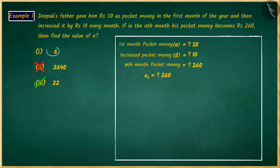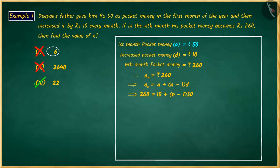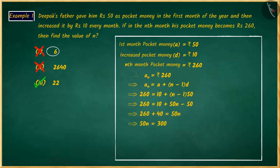If you have chosen the first option, it is a good attempt. But this is also an incorrect answer. Here, you have correctly written the formula for the nth term. But you replaced the value of the first term with the common difference and the value of the common difference with the first term, and solving the problem by substituting those values in the formula gives you the wrong answer.